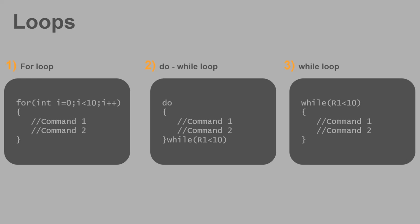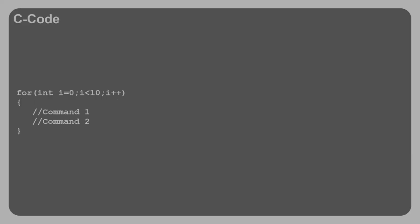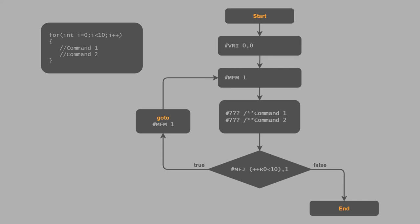First, let's start with a for loop and a closer look at the equivalent C code. Our loop should be performed 10 times, executing several lines of code within it. On the left side we can see the C code; on the right side is a flowchart with the commands of the UniTFT series. The difference between C code and the macro script language is that the for loop is always executed at least one time. If this is not desired, you must prevent it with an if query in advance.